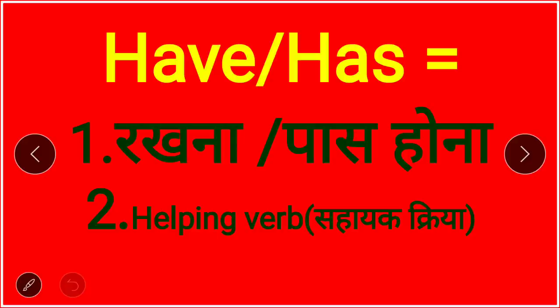Friends, the use of have or has happens in only two places — only two places. The first use is have or has as a main verb (mukhya kriya), which means 'rakhna' — to keep or to possess.